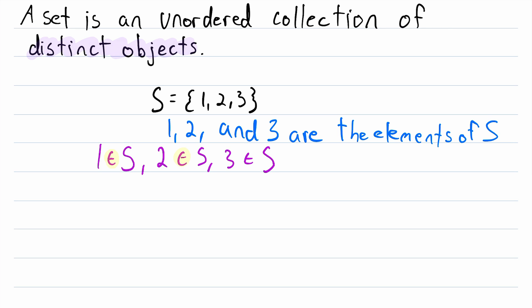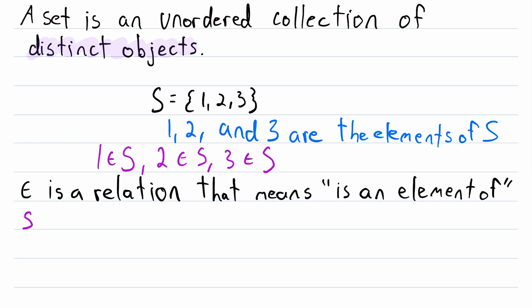This little symbol here that kind of looks like an E is a relation that means 'is an element of.' It's also referred to as set membership. Because, for example, if 1 is an element of S, then we could say that 1 is a member of the set S.